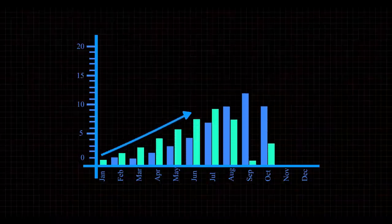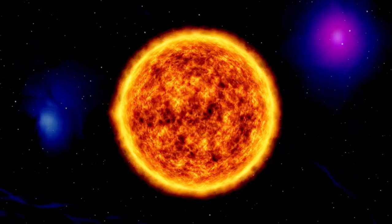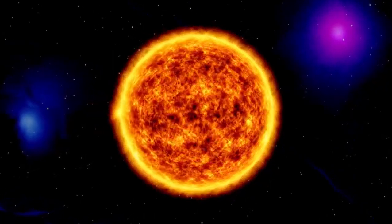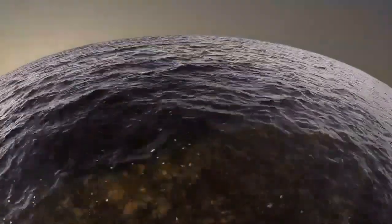It resides within the habitable zone of its star. This means that Proxima b is at a distance from Proxima Centauri where the temperature could potentially allow for liquid water to exist on its surface, a crucial ingredient for life as we know it.